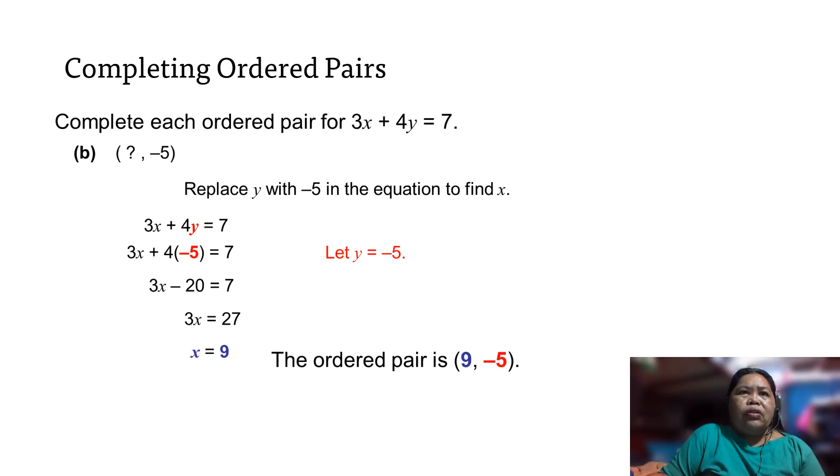The same way we have to complete the ordered pair. Your y is given, which is -5. Just the same: substitute or replace the value of y by -5. So we have 3x + 4(-5) = 7. So 3x - 20 = 7. You do like this: 3x - 20 + 20, then you do the same on this side: 7 + 20. That's why we get 27 here. Then divide it by 3. Cancel. Your x = 9. 27 divided by 3 is 9. So therefore, the ordered pair is (9, -5).